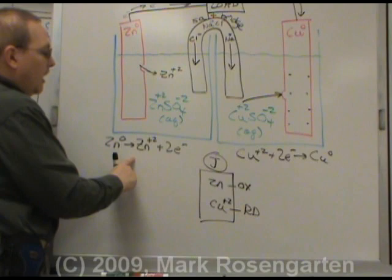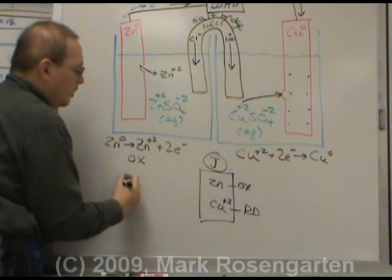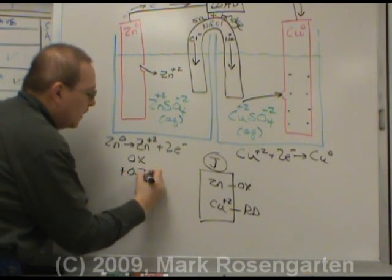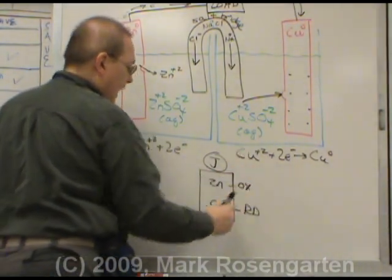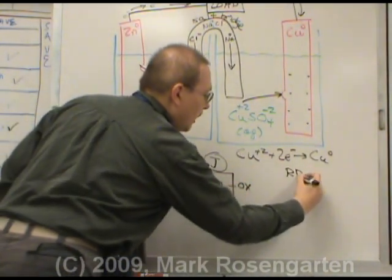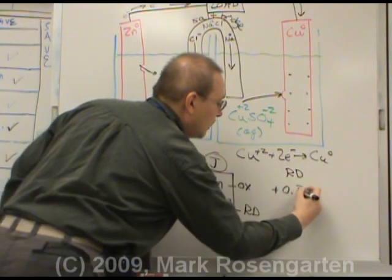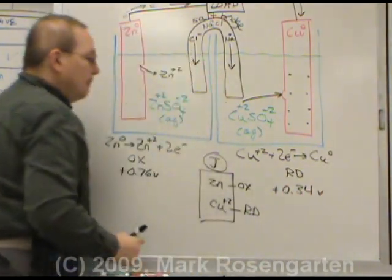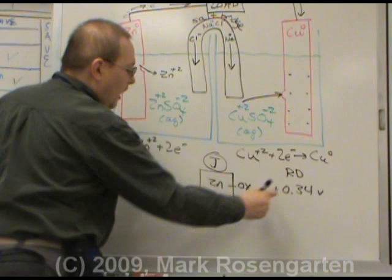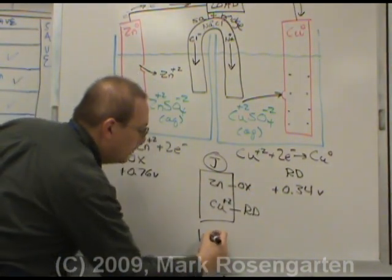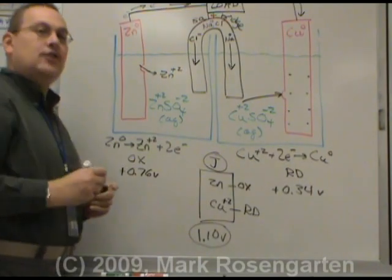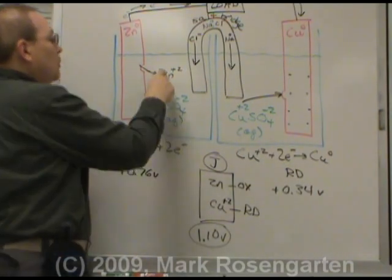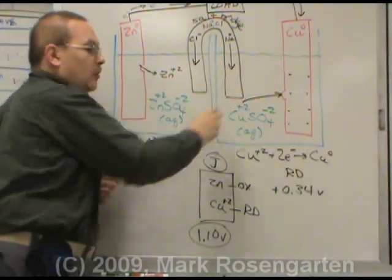Zinc has an oxidation potential of positive 0.76 volts. The copper plus two has a reduction potential of positive 0.34 volts, meaning that this entire cell has a total voltage of 1.10 volts. Again, that's assuming that the solutions have a one molar concentration.